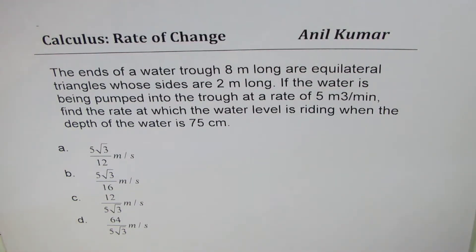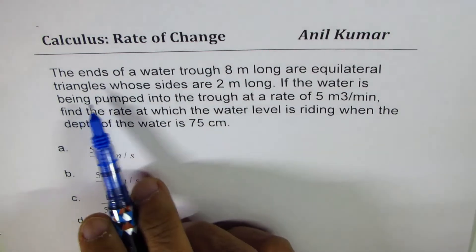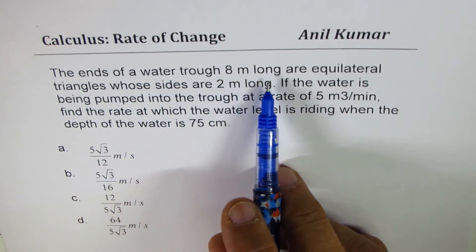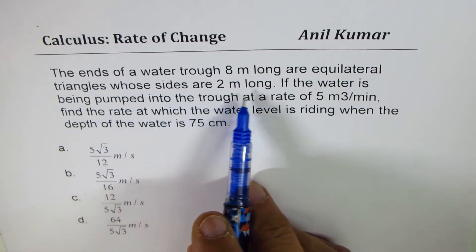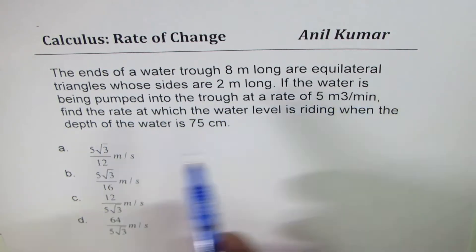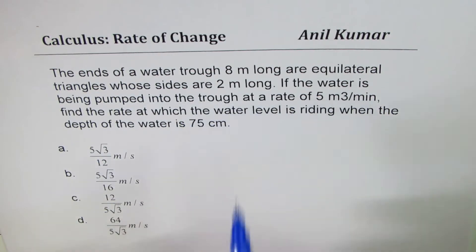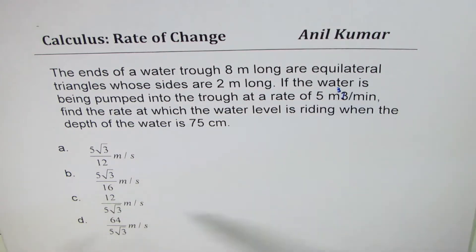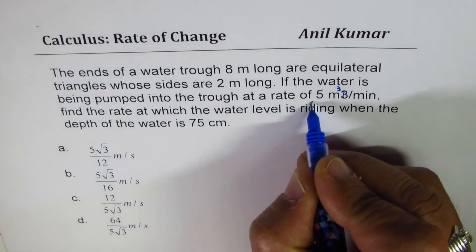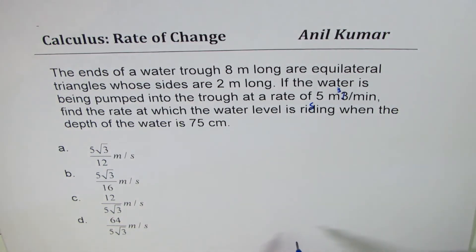I'm Anil Kumar sharing with you an excellent question on rate of change. The question here is: the ends of a water trough 8 meters long are equilateral triangles whose sides are 2 meters long. Water is being pumped into the trough at a rate of 5 cubic meters per minute. Find the rate at which the water level is rising when the depth of the water is 75 centimeters.